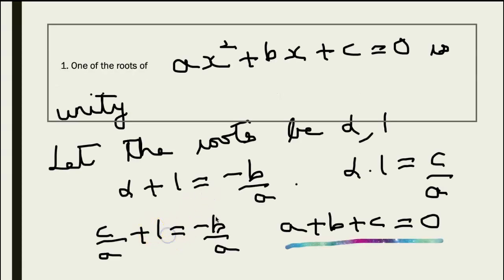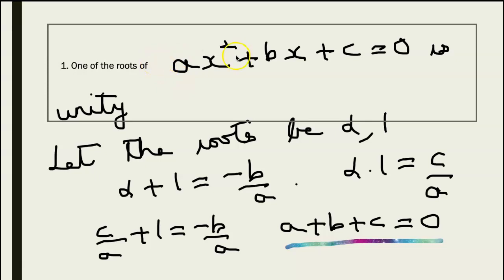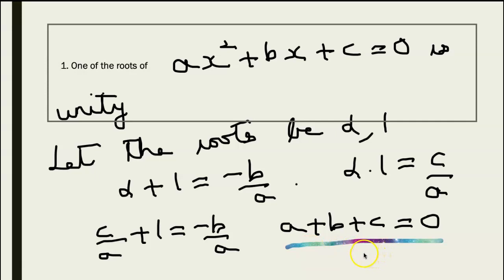Find the condition that one of the roots of ax² + bx + c = 0 is unity. Unity is 1. So let the roots be alpha and 1. So I have alpha + 1 = -b/a and alpha × 1 = c/a, that is the product of the roots. So substituting for alpha, c/a + 1 = -b/a, or a + b + c = 0.